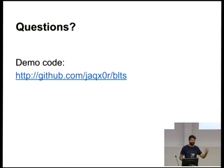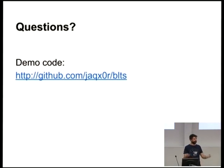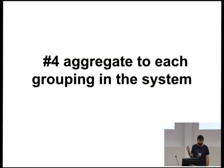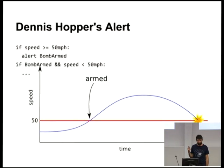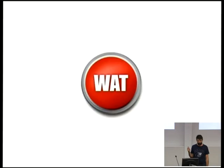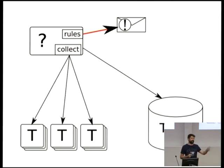Q&A: An audience member asks about the architecture diagram and whether it describes an existing product. The speaker clarifies this is an inspirational talk about where monitoring could go. The audience member mentions a tool called Performance Co-Pilot that looks like what was described. The speaker says they haven't heard of it, and that it sounds crufty but like an excellent starting point for building something less crufty.